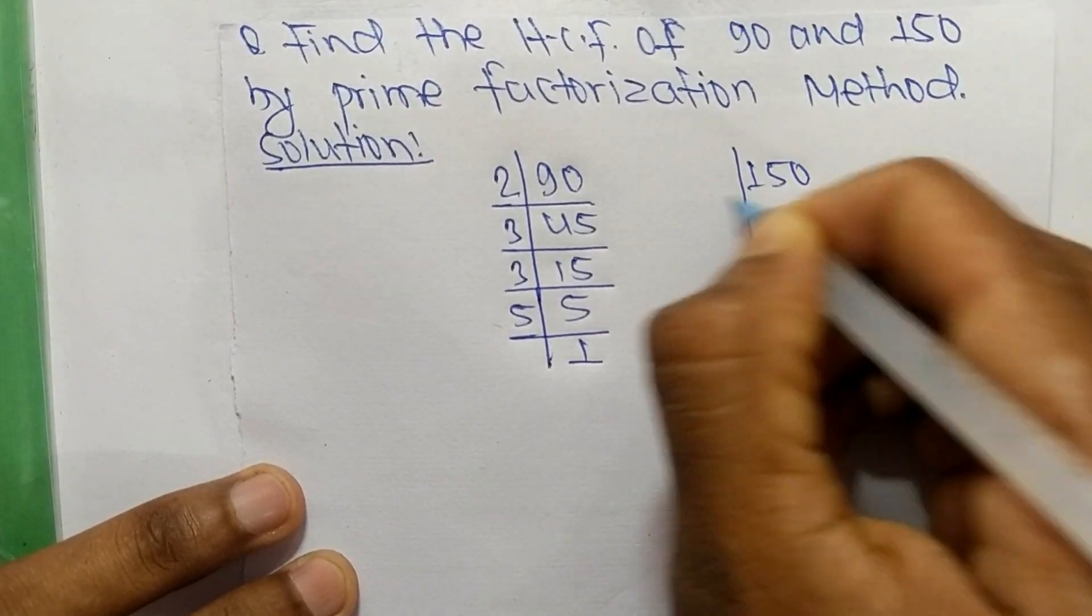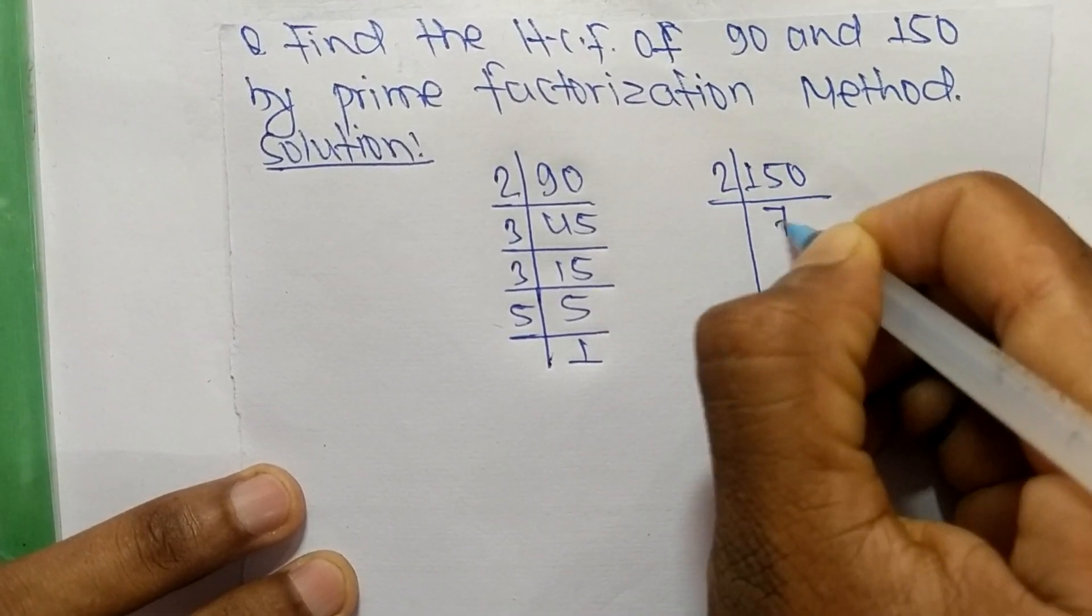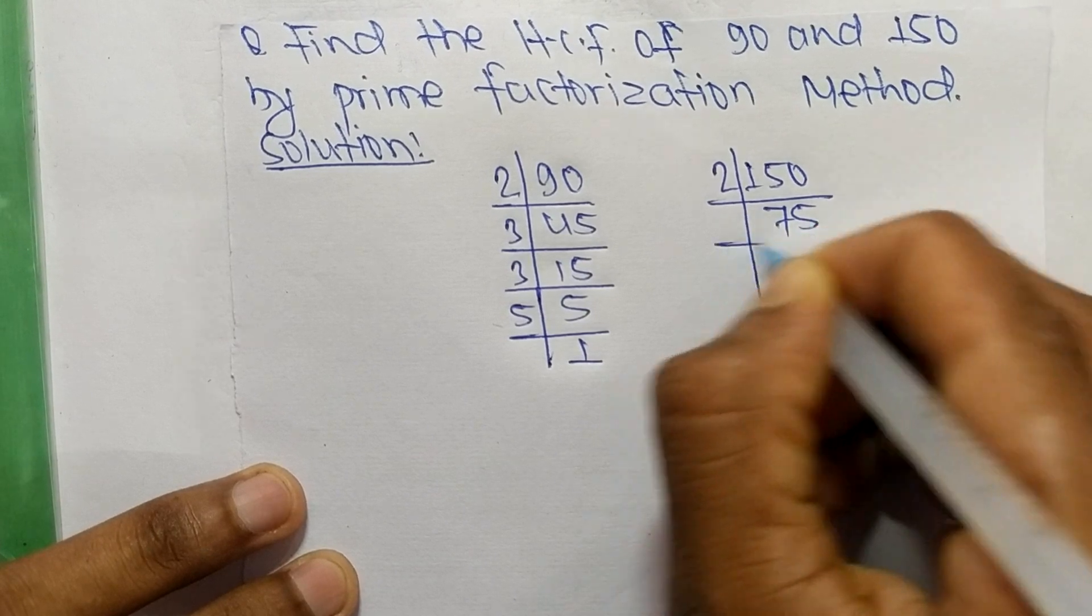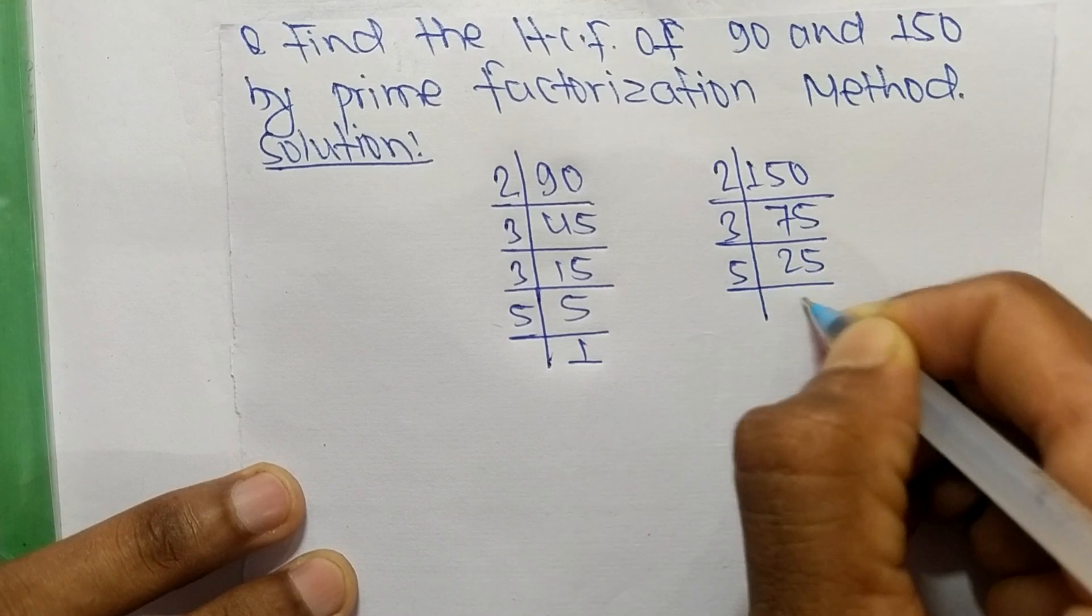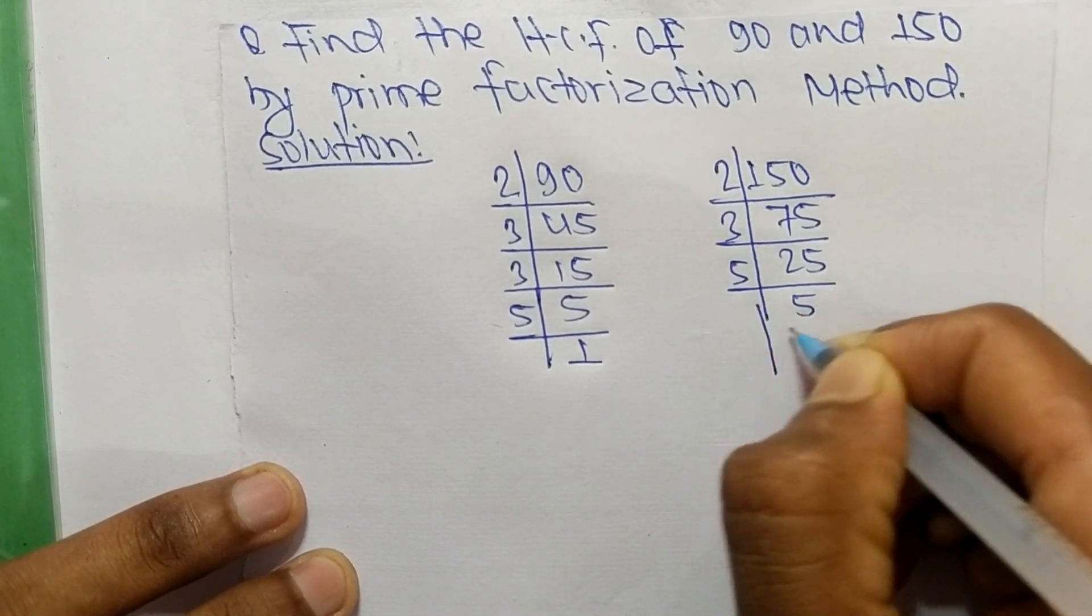The prime factors of 150 are: 2 times 75 means 150, 3 times 25 means 75, 5 times 5 means 25, and 5 times 1 means 5.